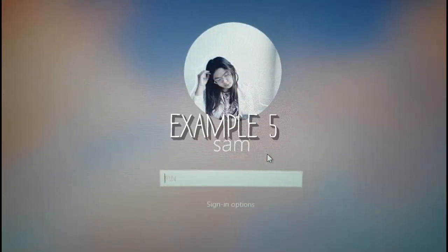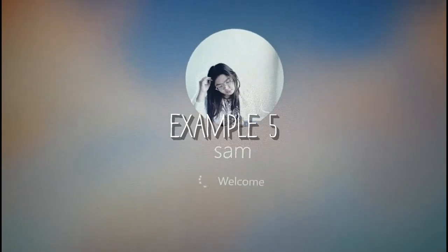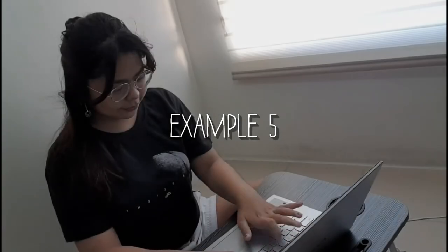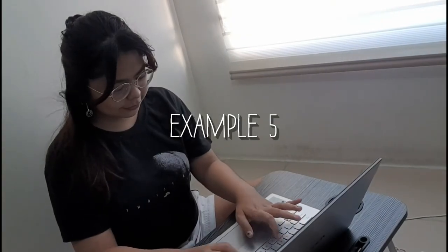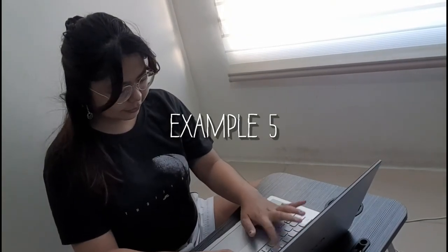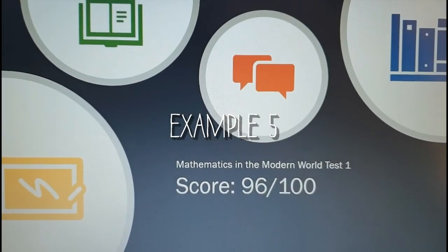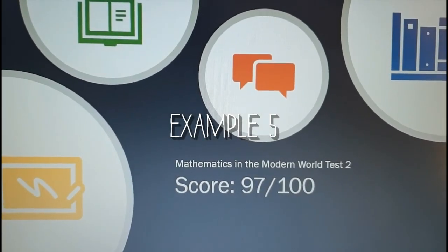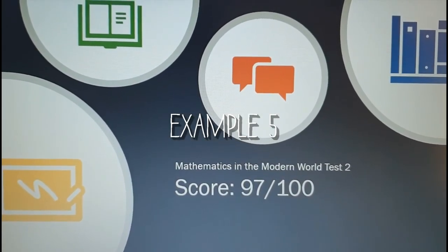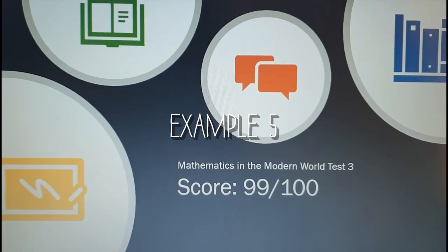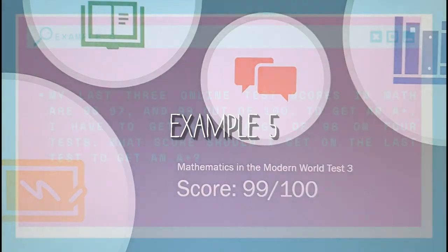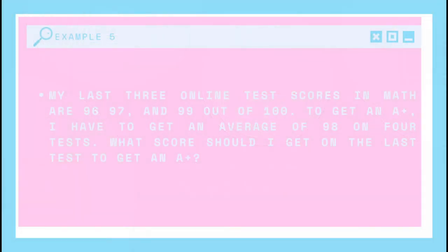So, you're doing good, guys. We are now down to our last problem. Example number 5. My last 3 online test scores in BAT are 96, 97, and 99 out of 100. To get an A+, I have to get an average of 98 on 4 tests. What score should I get on the last test to get an A+?